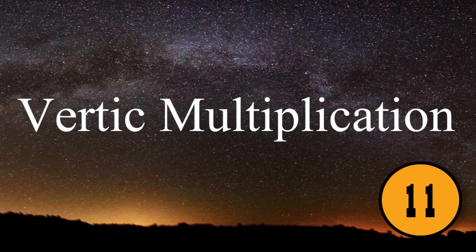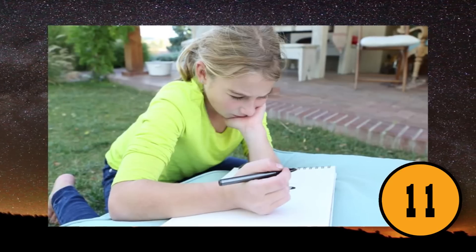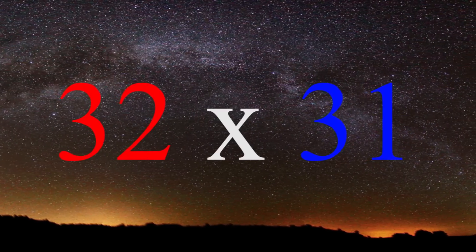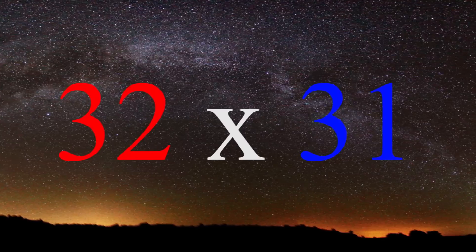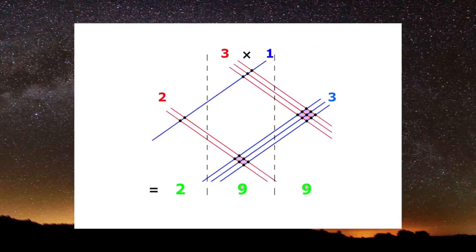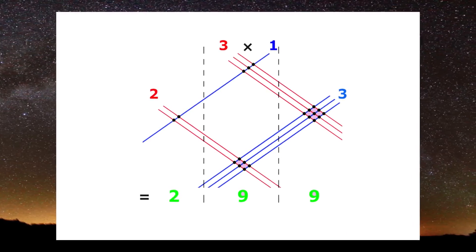11. Vertical Multiplication. If you find drawing is easier to figure out a math problem, then you can use this method. If you want to figure out 32 times 31, you need to break it down on paper. The 32 is written in red, the 31 is written in blue, backward. Next, try a long line for each number. Next, draw a dot where the lines intersect.